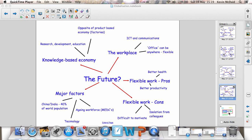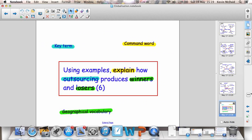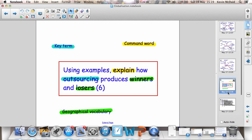Okay, now again, this is going to have a six-mark question. A six-mark question might look something like this. Using examples explain how outsourcing produces winners and losers. Think about sweatshops, Nike, LEDCs.